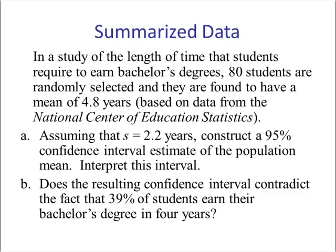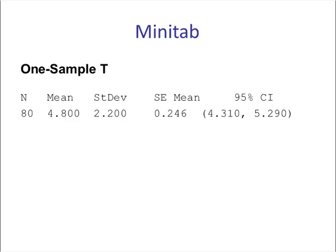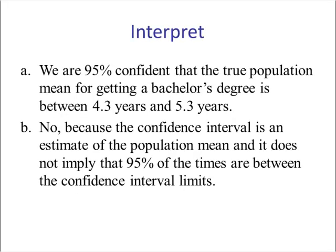Our last example. In a study of the length of time students require to earn bachelor's degrees, 80 students are randomly selected and found to have a mean of 4.8 years, based on data from the National Center of Education Statistics. Assuming S is 2.2 years, construct a 95% confidence interval estimate of the population mean. Here's the Minitab printout. Part A: we are 95% confident that the true population mean for completing a bachelor's degree is between 4.3 years and 5.3 years.